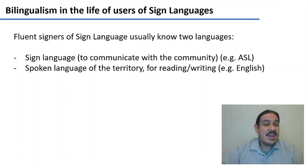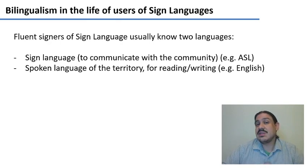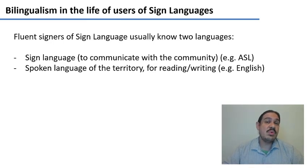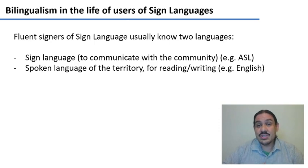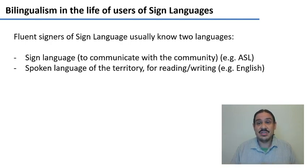If you think about it, someone who uses a sign language really needs to be at least bilingual. They need to know the sign language itself so that they can communicate with other members of the deaf community — for example, ASL — but they also need to know the spoken language of the territory, for example English, so that they can read and write, because all the newspapers are going to be in English, and the internet is going to be in English.